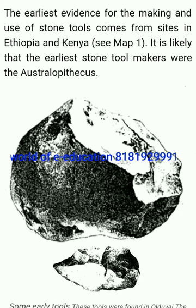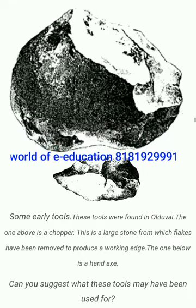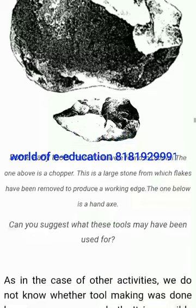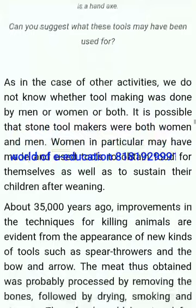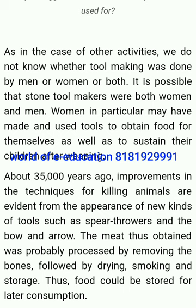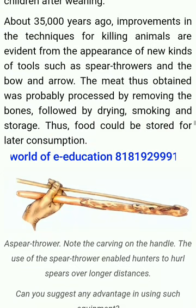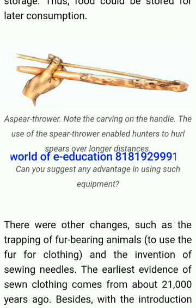The earliest evidence for the making and use of stone tools comes from sites in Ethiopia and Kenya. It is likely that the earliest stone tool makers were the Australopithecus. Some early tools found at Olduvai include a chopper — a large stone from which flakes have been removed to produce a working edge — and a hand axe. We do not know whether tool making was done by men or women or both. About 35,000 years ago, improvements in techniques for killing animals are evident from the appearance of new kinds of tools such as spear throwers and the bow and arrow. The meat thus obtained was probably processed by removing the bones, followed by drying, smoking and storage.